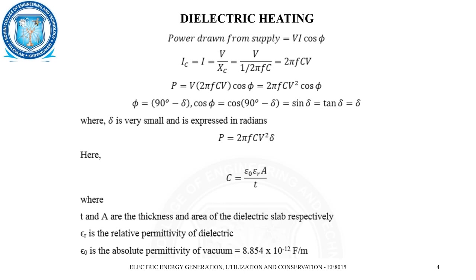Taking phi equal to 90 degrees minus delta (since this is a capacitive circuit), on substituting, cos phi becomes cos(90° − δ), which is sine delta. This can be approximated as delta when it is very small and expressed in radians. So the power formula becomes P = 2πf·C·V²·δ. The capacitance formula is C = permittivity × area divided by thickness, where the absolute permittivity of vacuum is 8.854 × 10⁻¹² F/m, εr is the relative permittivity of the dielectric medium (εr = 1 for air), T is the thickness, and A is the area of the dielectric slab.